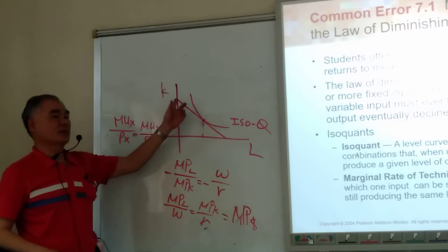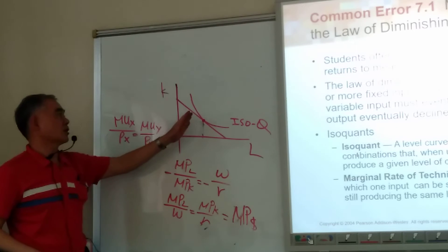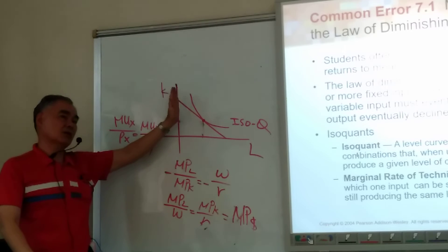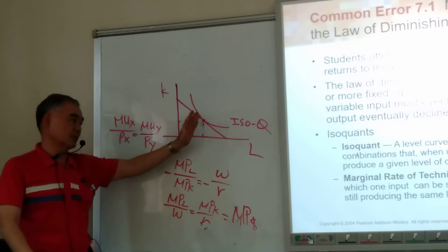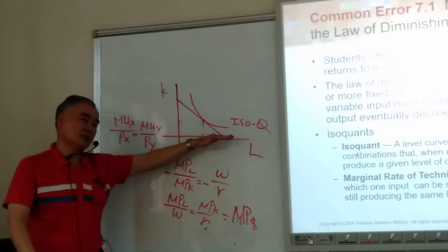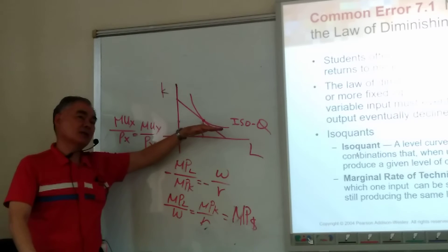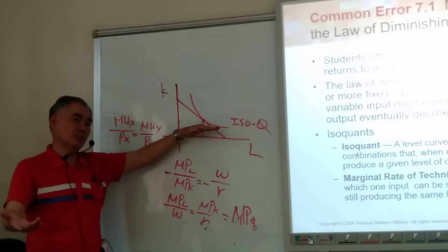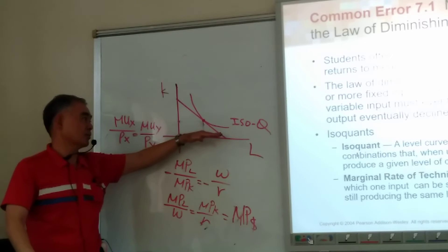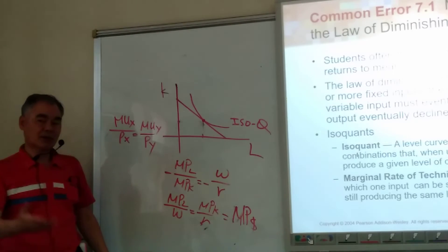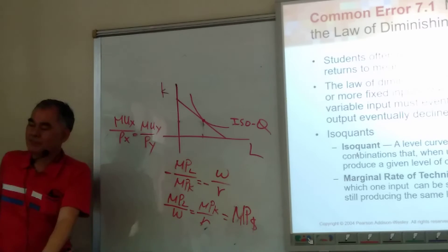Each dollar you spend on labor and each dollar you spend on capital should give you the same amount of marginal product. When the ratio is higher for labor, labor gives more contribution so you should use more labor. When capital gives a higher contribution, you move toward using more capital. The story is the same as for consumers.